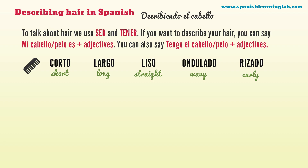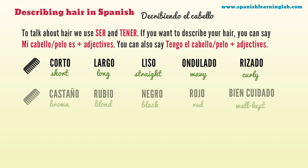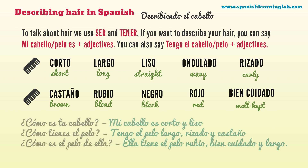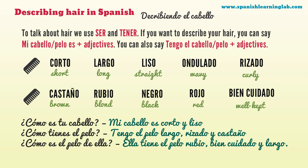The adjectives you may need are: corto, largo, liso, ondulado, rizado, castaño, rubio, negro, rojo, bien cuidado. Here are some examples: ¿Cómo es tu cabello? Mi cabello es corto y liso. ¿Cómo tienes el pelo? Tengo el pelo largo, rizado y castaño. ¿Cómo es el pelo de ella? Ella tiene el pelo rubio, bien cuidado y largo.